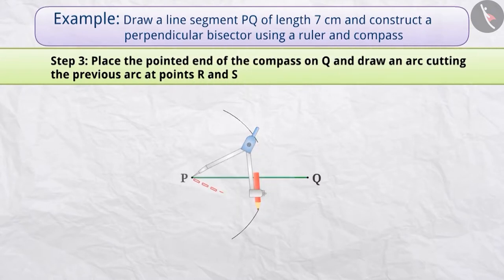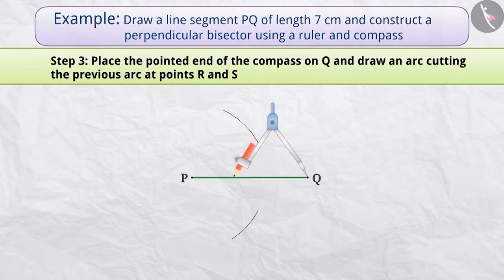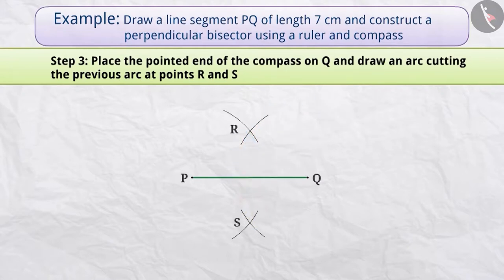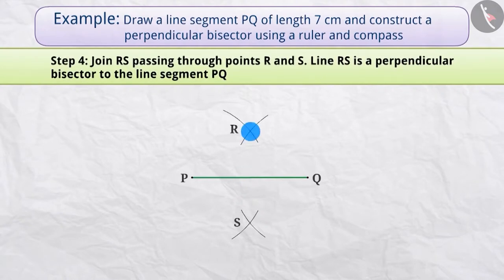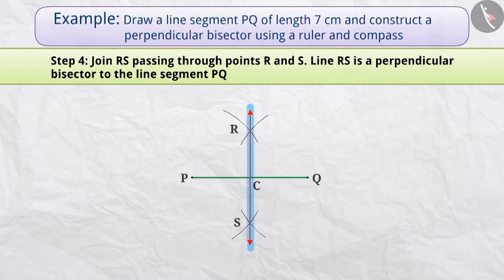Step 3. Without changing the compass setting, place its pointed end on Q and draw an arc, cutting the previous arc at points R and S. Step 4. Join R-S passing through points R and S, which intersects the line segment P-Q at point C. Line R-S is a perpendicular bisector to the line segment P-Q.